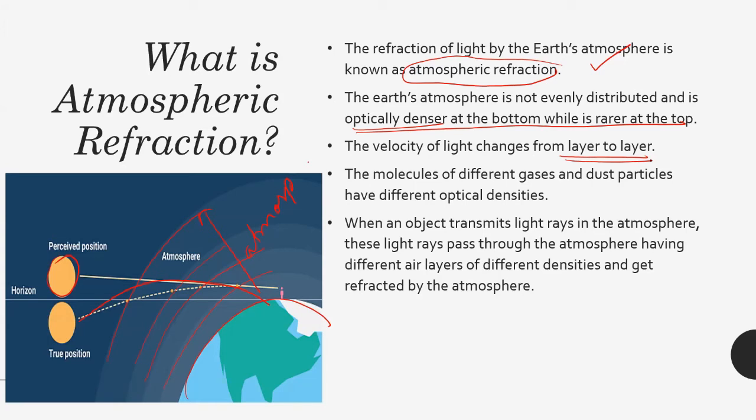Having different refractive index, the amount of bending will also differ. When an object transmits light rays in the atmosphere, these light rays pass through the atmosphere having different air layers of different densities and get refracted by the atmosphere. This entire phenomena which is happening is called as atmospheric refraction.